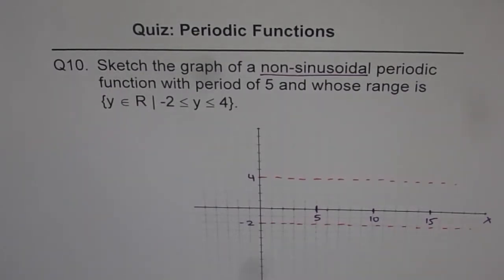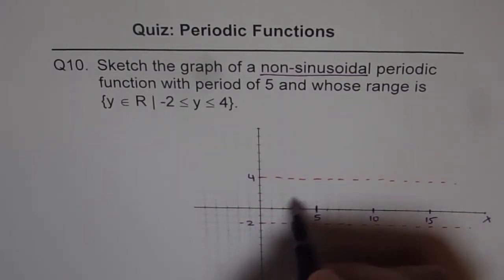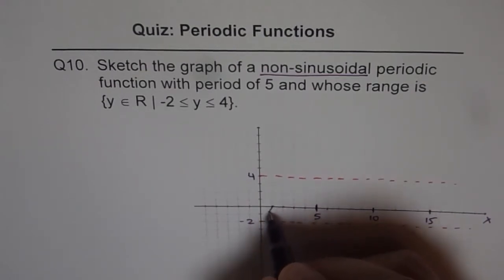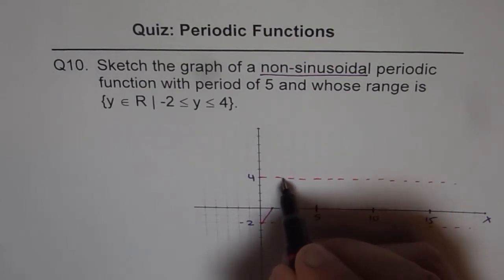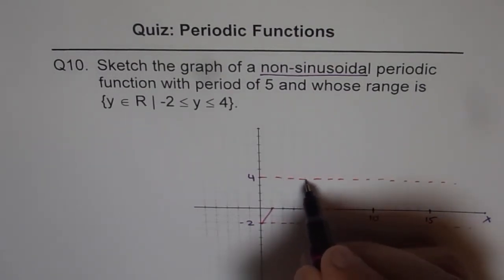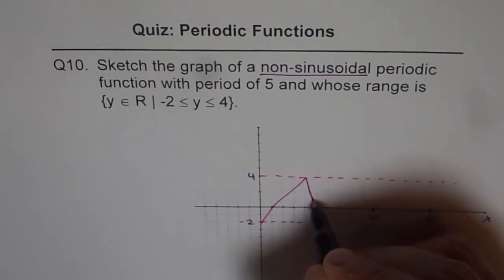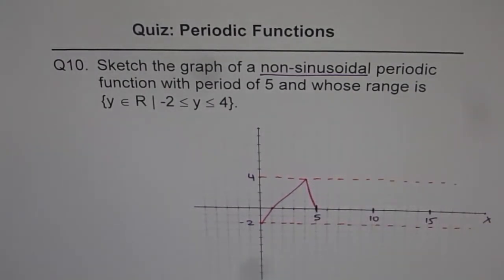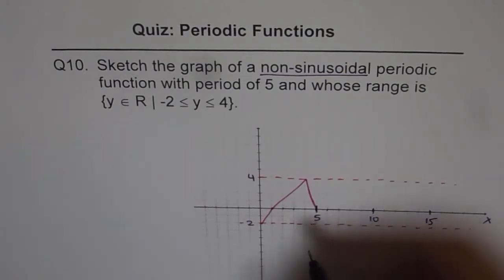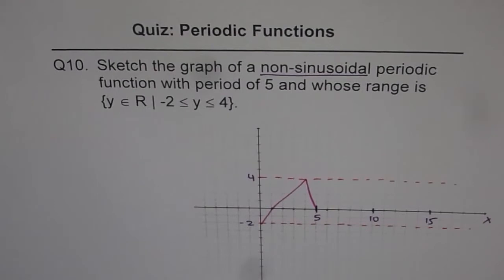So let me draw one. So what we need to do is draw something here and repeat it. So let's start with the minimum value and go to the maximum. So one way is that we can go straight like this. And then, let's change it a bit. Let's say we make it like this. And then we can finish it off at 5. If we do this, then how will the next cycle repeat? That's a good question.